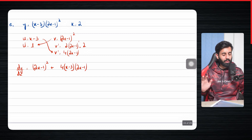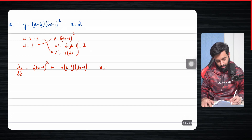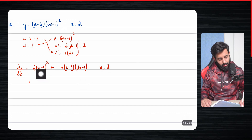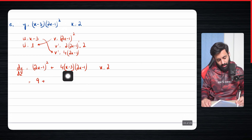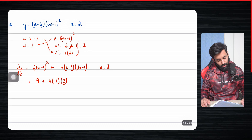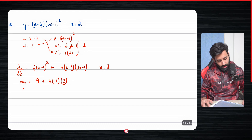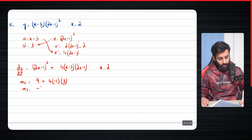We're not going to simplify this because we just have to plug in the value of x, which is two. Two into two is four, four minus one is three, square of which is nine; plus four into two minus three, which is minus one, and then two into two is four, four minus one is three. So the gradient of tangent turns out to be nine minus twelve, which is equal to minus three. If you're not confident about your mental math, I'd strongly suggest using a calculator.